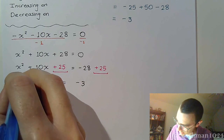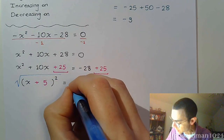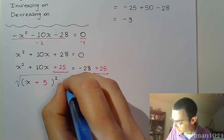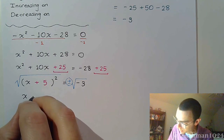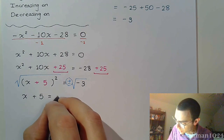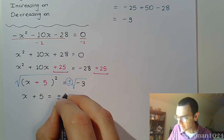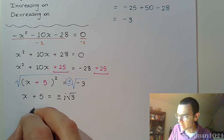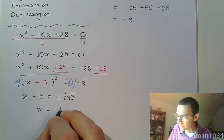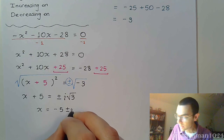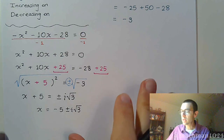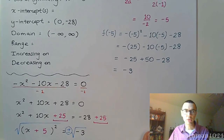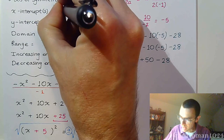Applying the square root property to both sides: x + 5 = ±√(-3). That gives us i√3, so x = -5 ± i√3. These are imaginary solutions, which means there are no real x-intercepts for this function.